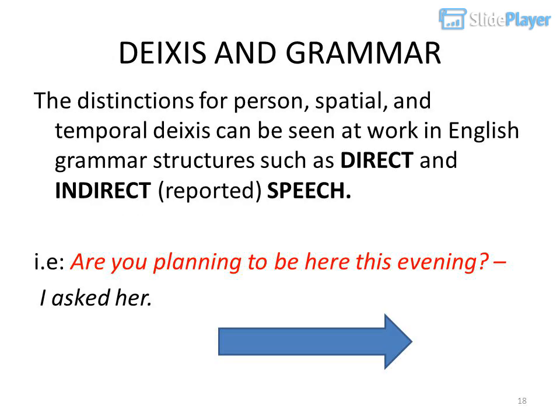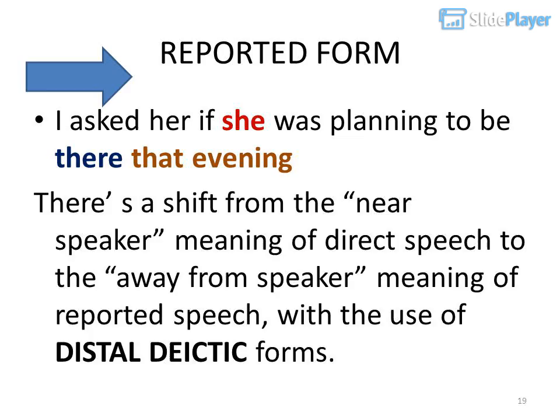Deixis and Grammar. The distinctions for person, spatial, and temporal deixis can be seen at work in English grammar structures such as direct and indirect reported speech. For example: 'Are you planning to be here this evening?' becomes 'I asked her if she was planning to be there that evening.' There is a shift from the near-speaker meaning of direct speech to the away-from-speaker meaning of reported speech, with the use of distal deictic forms.